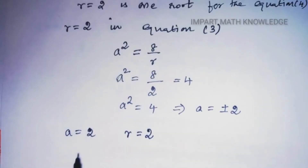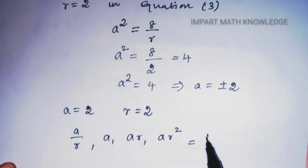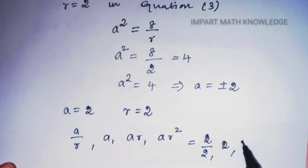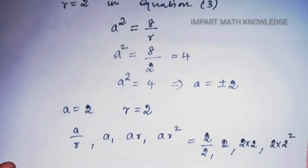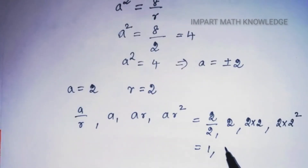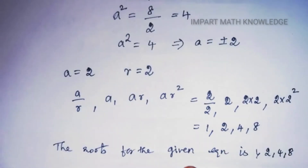The roots are a/r, a, ar, ar². With a = 2 and r = 2: a/r = 2/2 = 1, a = 2, ar = 2×2 = 4, ar² = 2×4 = 8. So the roots of the given equation are 1, 2, 4, and 8.